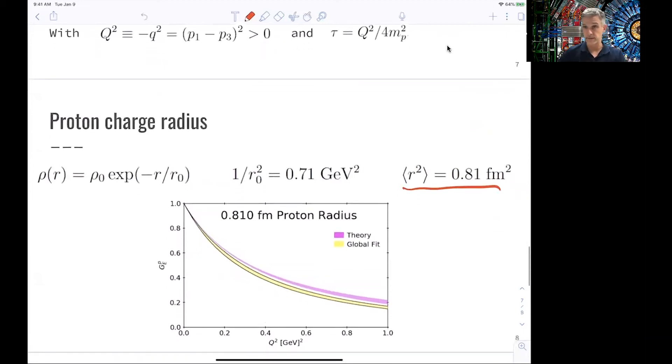This measured charge is still today a hot topic in particle physics because these measured distributions do not quite agree with the theory predictions. You see this here—for this value of the proton charge, the theory and the global fit to the data don't quite agree. You would have to go to slightly higher values of the proton radius in order to have the theory and the previous experiments agree.